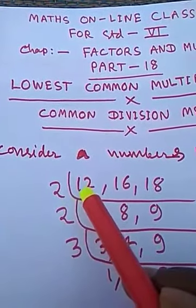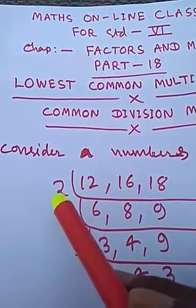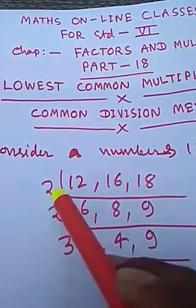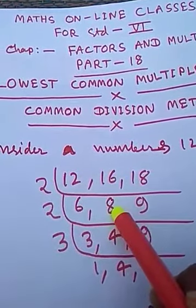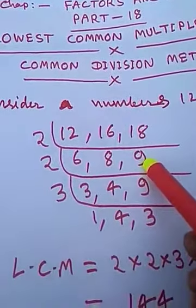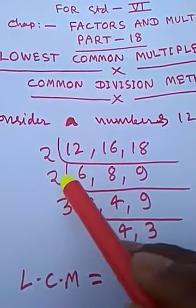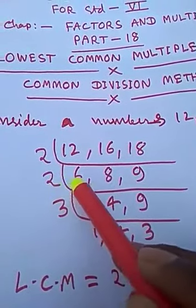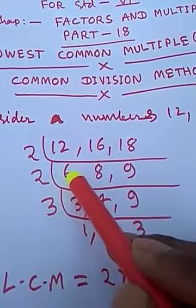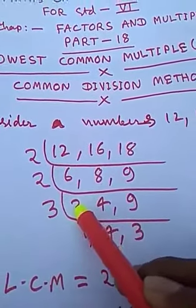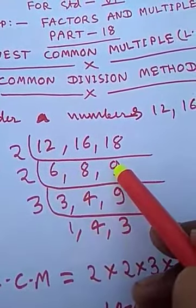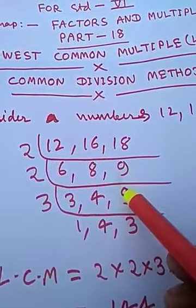We select a number that will divide at least two of them. We select 2. 2 divides 12 six times, 2 divides 16 eight times, and 2 divides 18 nine times. Now we select 2 again: 2 divides 6 three times, 2 divides 8 four times, but 2 does not divide 9, so 9 comes down.